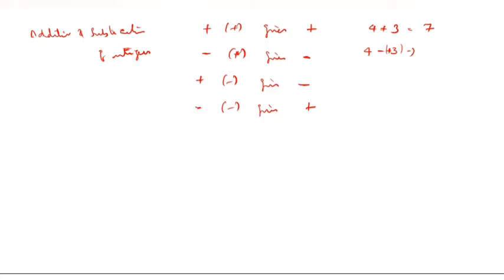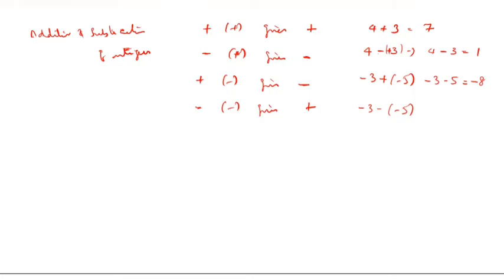Plus 3 gives 4. Negative plus positive gives negative, so you write negative. For minus 3 plus minus 5: negative plus negative gives negative, so minus 3 minus 5 equals minus 8. And negative of negative gives positive.